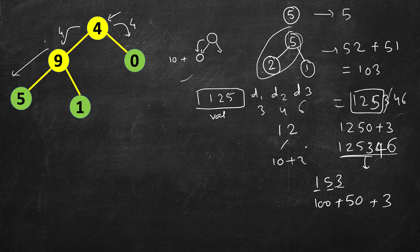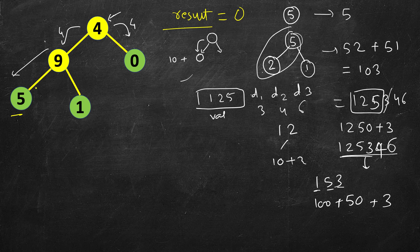We will have a global result variable initialized to 0. Whenever we reach a leaf node, we keep track of the digits accumulated on the path and add that number to result. Starting traversal from the root — its left and right are valid so we don't add yet. We pass 4 down; the child multiplies by 10 making it 40, then adds the current digit. We pass 40 further down, which becomes 49, and pass 49 to its left and right children.